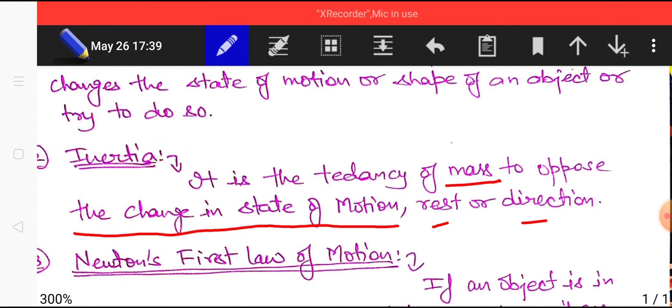So inertia is simply saying that any object doesn't want to change its state of motion. If it is in rest it wants to continue in rest and that becomes inertia of rest. If something is in motion it wants to be in state of motion and that is known as inertia of motion.